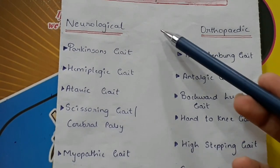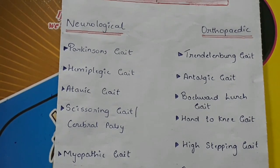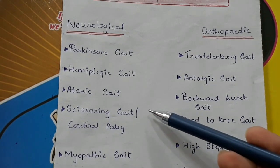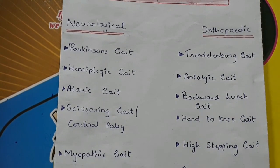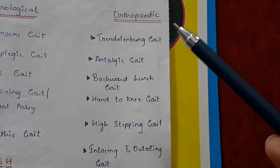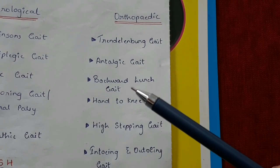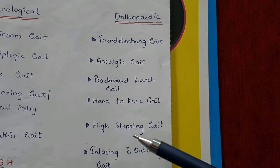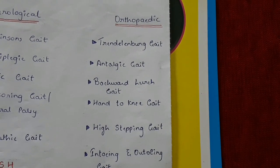Under neurological gait we have the Parkinson's gait, hemiplegic gait, ataxic gait, scissoring or cerebral palsy gait, and myopathic gait. Under orthopedic gait we have the Trendelenburg gait, antalgic gait, backward lurch gait, hand to knee gait, high stepping gait, in-toeing and out-toeing gait.